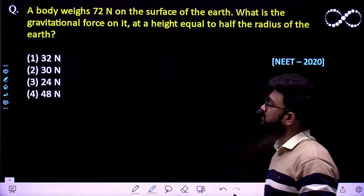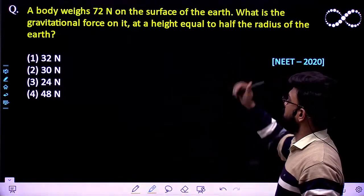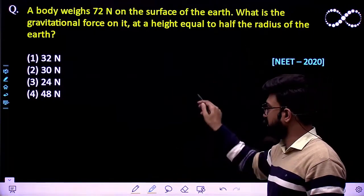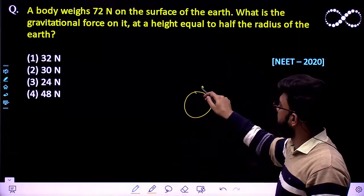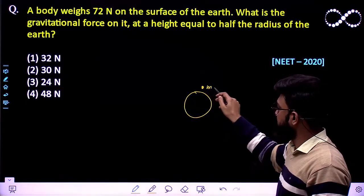Question says a body weighs 72 Newton on the surface of earth. So if I have taken Earth, a certain object whose mass is m and acceleration due to gravity over here is g.